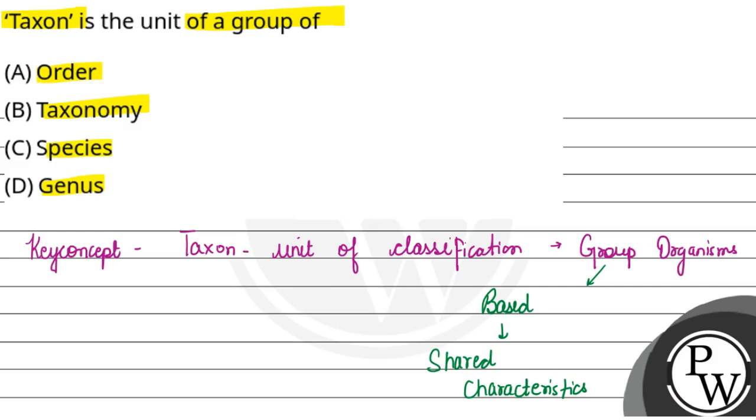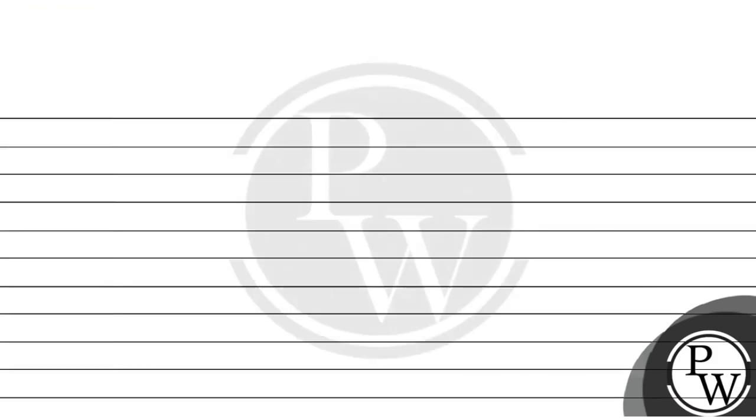Now considering that, we can elaborate a little more. The taxon is the basic unit of classification. It particularly includes taxonomic groups of any rank.